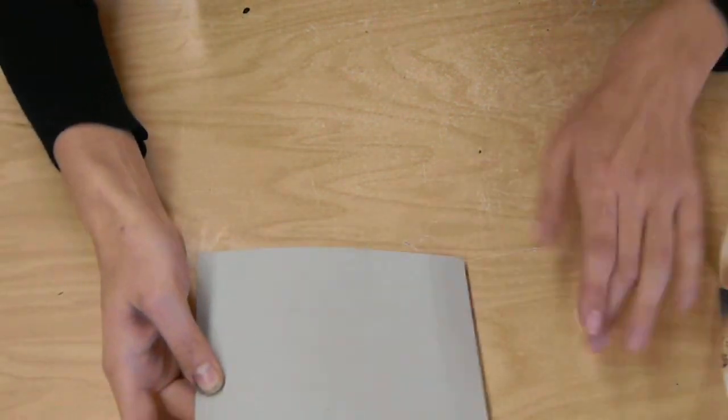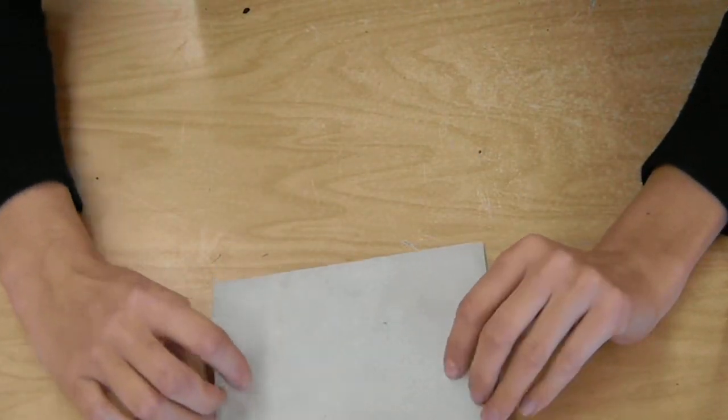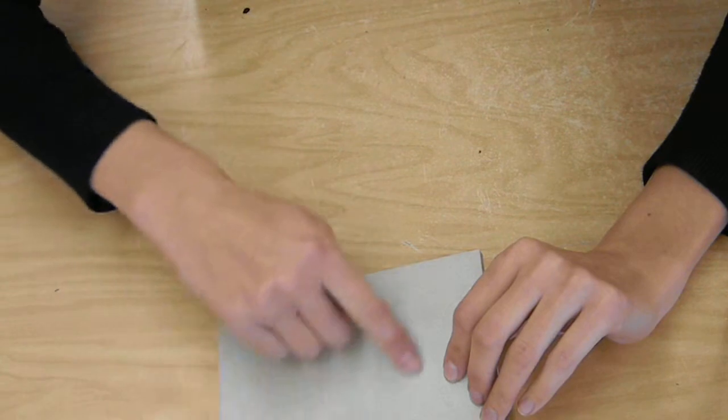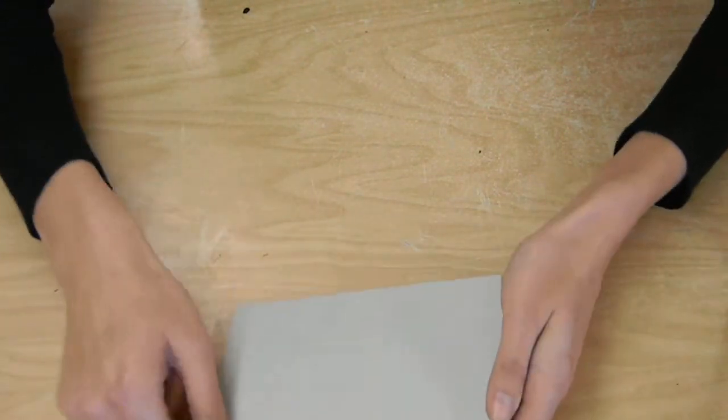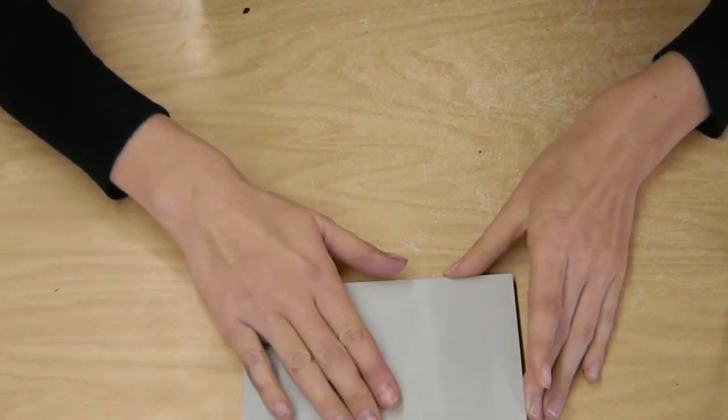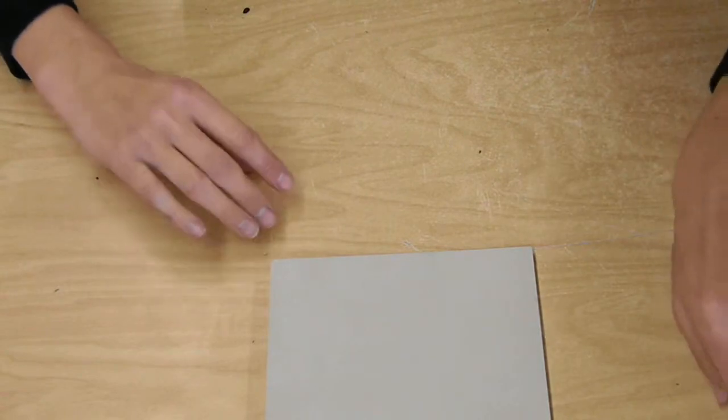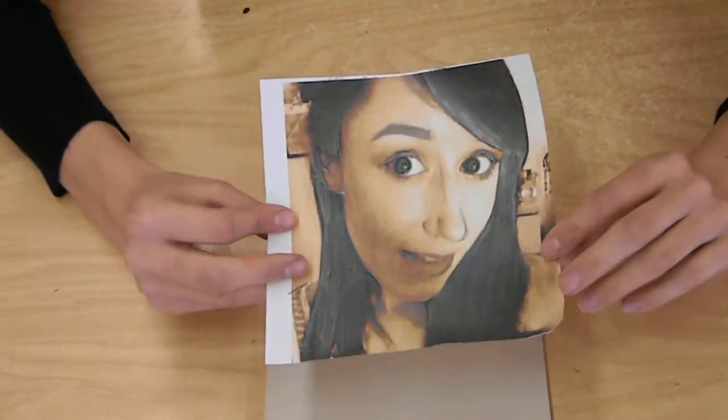What I'm going to do now is take my printing plate. This is a piece of easy cut, and if you look at it there's two different sides. One side kind of has this sheen to it and the other side is a little bit more rough and textured, kind of like an eraser. This side, the side that feels like an eraser, is the side that you want to transfer it onto.